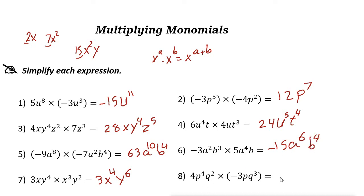You have 4 times negative 3 is negative 12. P to the power of 4 times p to the power of 1 is just p to the power of 5. And then q to the power of 2 plus 3 is 5.